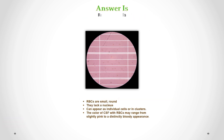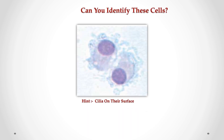Can you identify these cells in CSF? Correct answer is red blood cells. We can see small and round cells that lack a nucleus. They can appear as individual cells or in clusters. The color of CSF with RBCs may range from slightly pink to a distinctly bloody appearance.